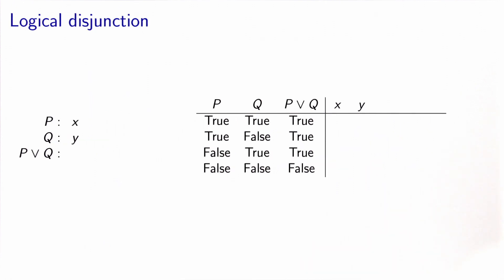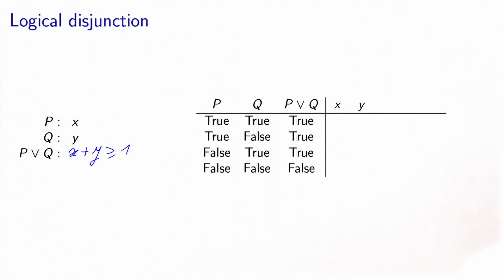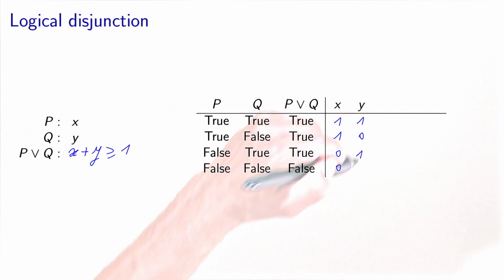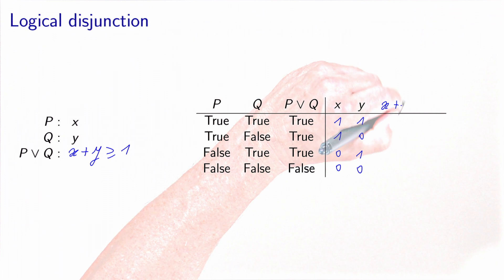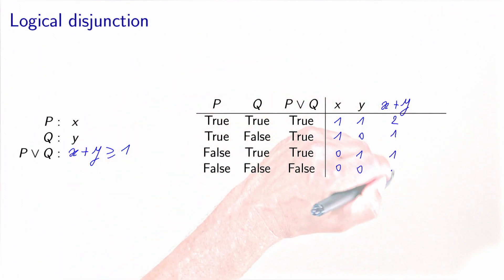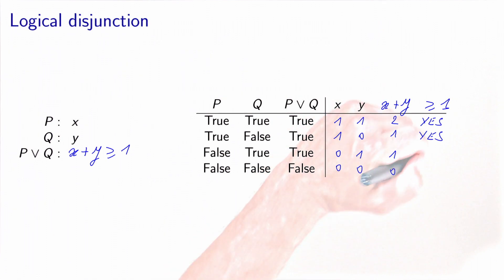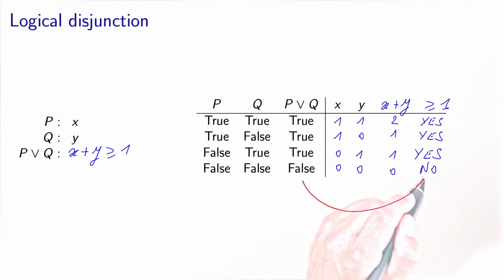The next one is the disjunction. If the clause p is represented by x and clause q is represented by y, disjunction — which is called p or q — is represented by the condition x plus y greater or equal to 1. The value of x corresponds to p: one, one, zero, zero. The value of y corresponds to q: one, zero, one, zero. Then x plus y equals two, one, one, zero. Is it greater or equal to one? Yes, yes, yes, no. We see that these two represent the same thing.